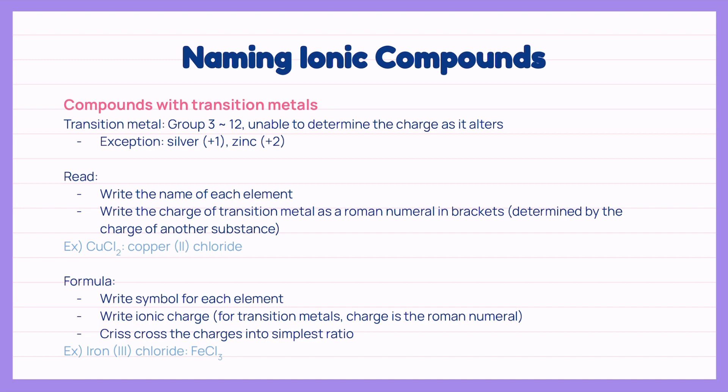Compounds with transition metals start to get a bit more trickier. Transition metals are the ones in group 3 to 12 which does not have a set charge unlike the others but gets altered. However, there are exceptions to this as silver has a 1 plus charge and zinc has a 2 plus charge all the time.